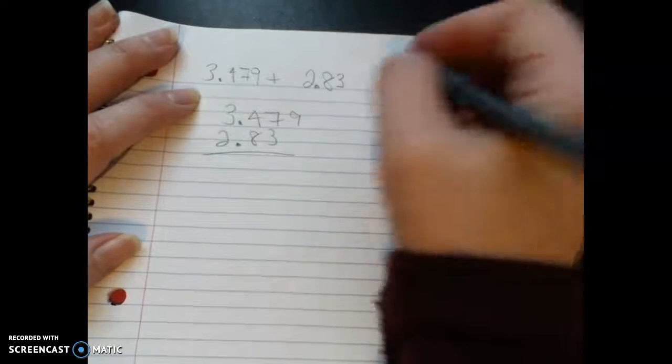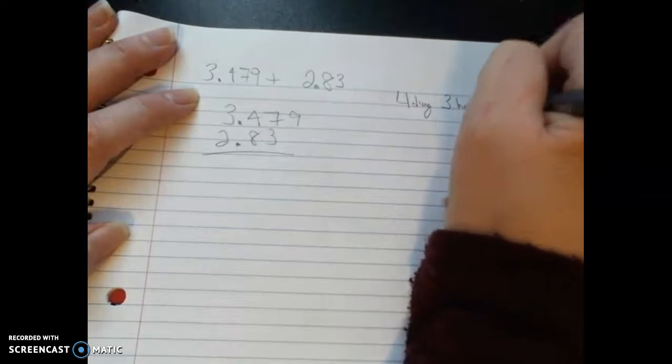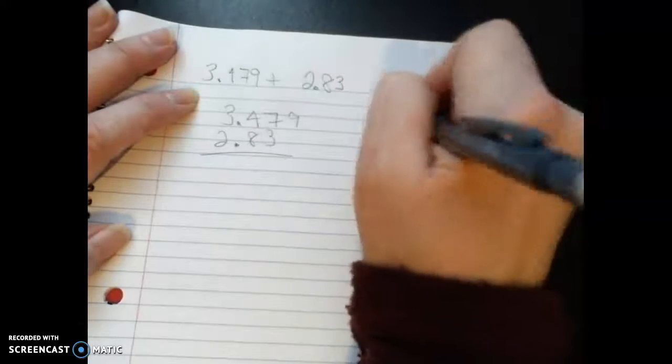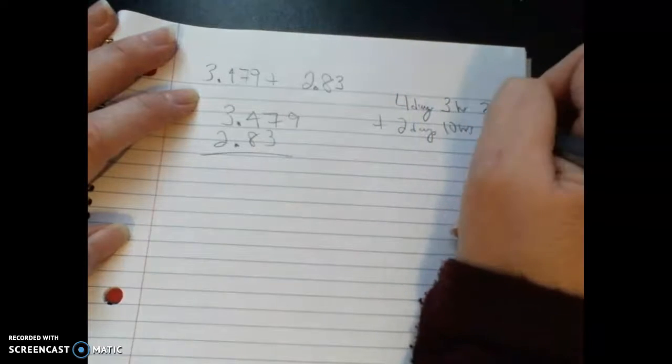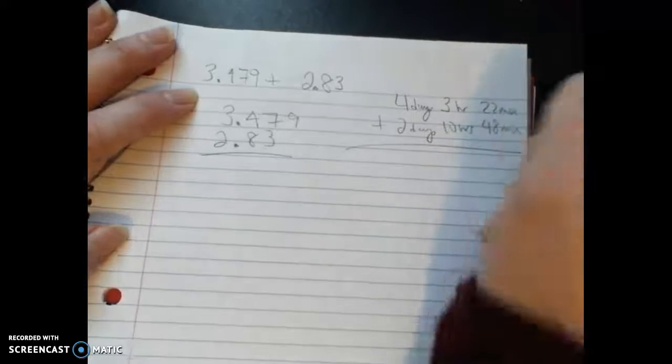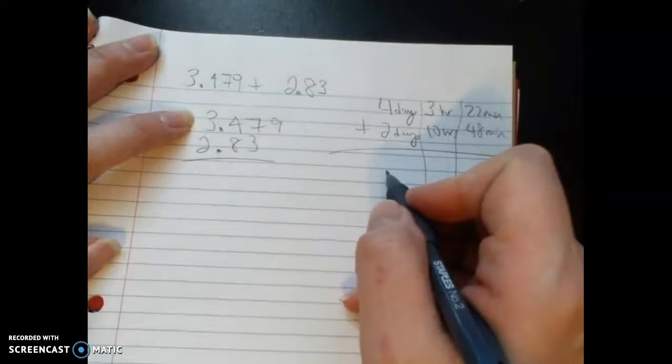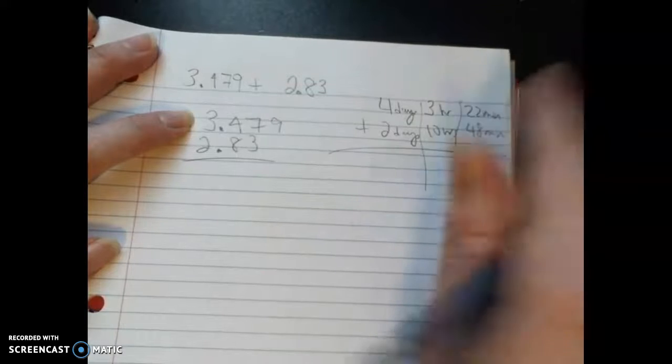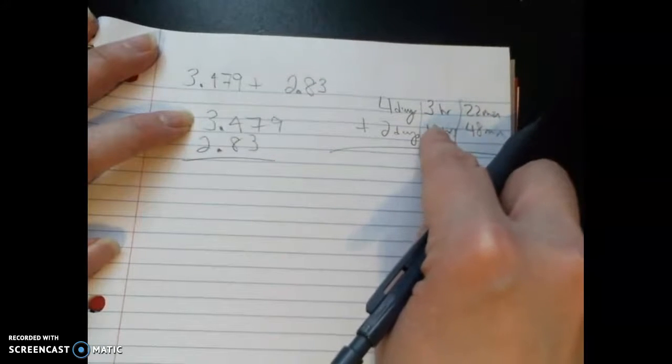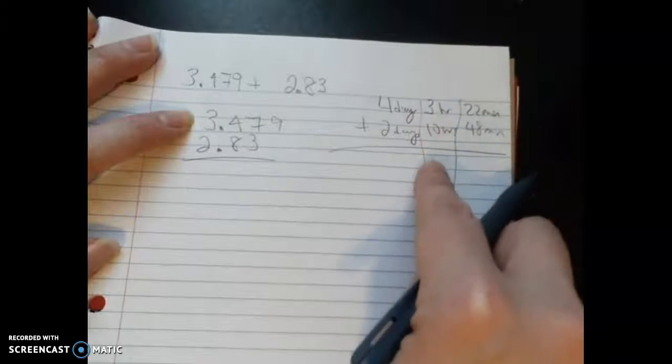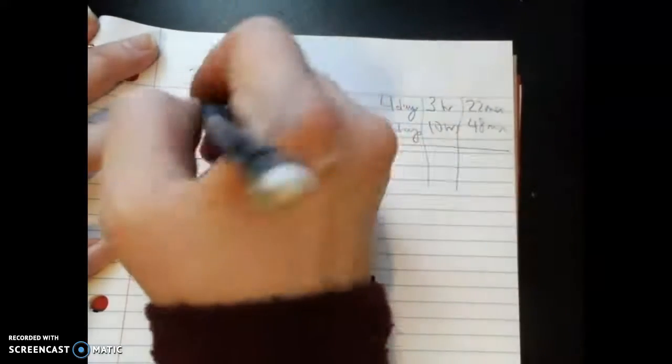It would kind of be like if you were adding 4 days, 3 hours, and 22 minutes plus 2 days, 10 hours, and 48 minutes. You would want to line up your units—minutes with minutes, hours with hours, days with days. Then if you have too many minutes and surpass 60, you have to regroup into an hour. If you hit 24 hours, you regroup into a day. You're lining up units that match, and by default the decimal just kind of goes along for the ride.